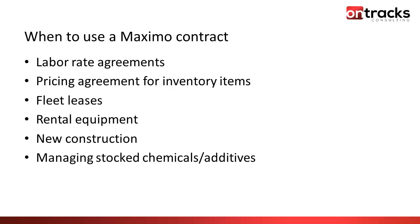Managing stock chemicals and additives is another use case. Maybe you have a truck come monthly and drop off around 100,000 gallons — sometimes it's 90,000, sometimes it's 105,000. You can define the unit price you pay and a maximum amount over the course of the year, so you're not writing a new PO every time. The vendor references that one contract on drop-off every month.